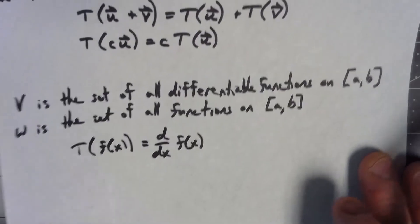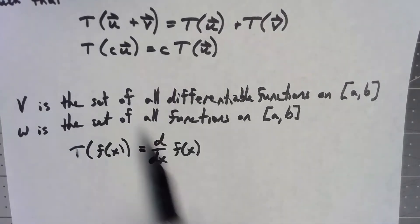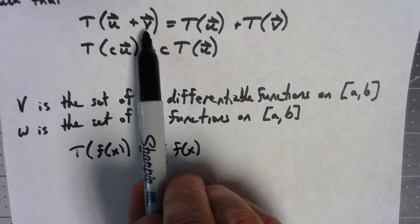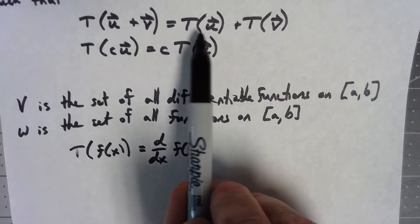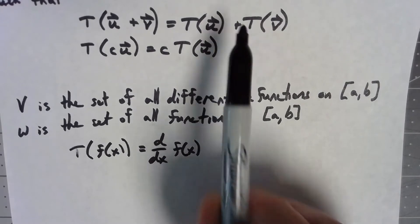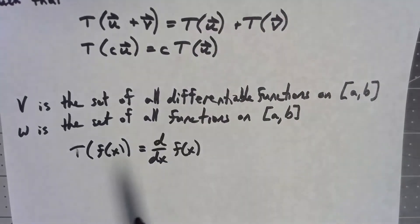And let's think about these two properties. If I try to transform, if I try to take the derivative of a sum of two functions, that's the same thing as taking the derivative of each function separately and then adding them together. So taking the derivative does preserve addition.